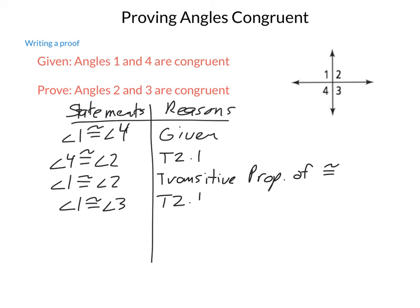Now, again, we can employ that same transitive property and say that angle 2 is congruent to angle 3. We are able to arrive using a given, the same theorem twice and the same property of congruence twice at our destination.